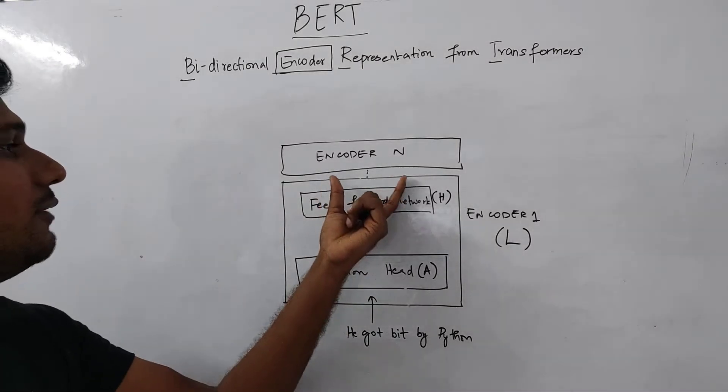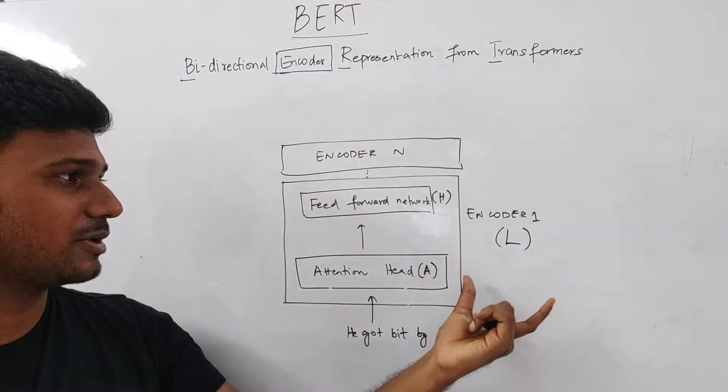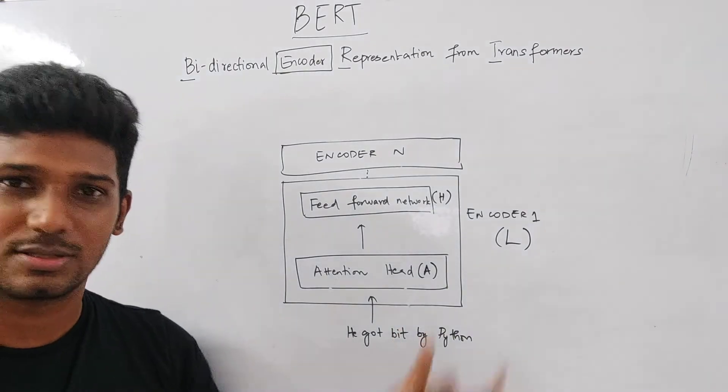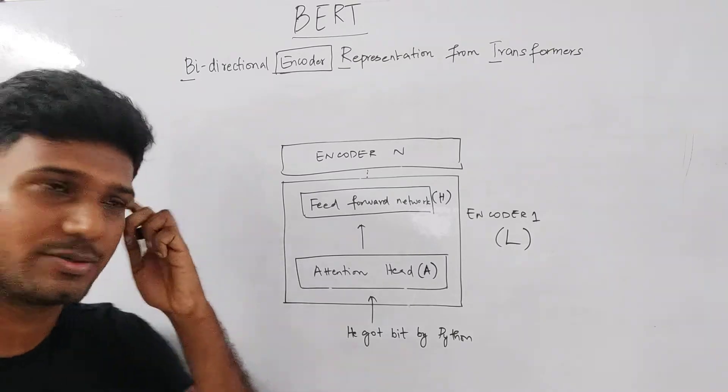And then we'll have multiple encoders like this. And how many encoders will be there? That also depends. In some cases, there can be six encoders. In some cases, there can be 12 encoders. And we'll see all these types in the upcoming videos too.